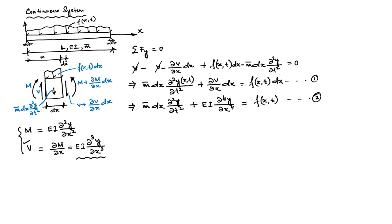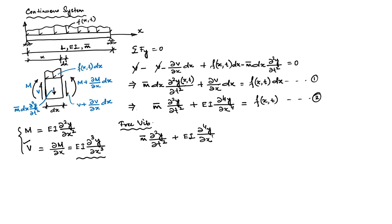As we normally do, we start with free vibration and then gradually add the external force and solve for complete response. You can notice that in this equation there is no damping force — gradually we will add the damping force. For undamped free vibration, the equation becomes: m̄ (∂²y/∂t²) + EI (∂⁴y/∂x⁴) = 0.